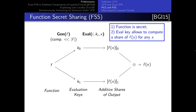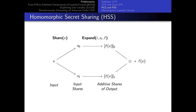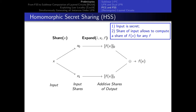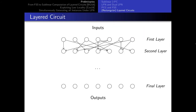I should briefly mention that function secret sharing is the dual of homomorphic secret sharing, where instead of having a secret function, we have a secret input. For the purposes of this talk, we needn't be concerned with HSS, simply noting that they exist as dual forms. Finally, our protocol doesn't work for the class of all circuits, but rather for the class of all layered circuits.